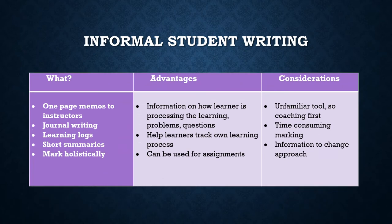Informal student writing is usually a one-page memo written to the instructor, a journal, learning logs, or short summaries — all marked holistically. You get information about how the learner is processing the learning, whether they have questions, and they track their own learning. The disadvantage is they may be unfamiliar with this tool, so you need to coach them first, and it is time-consuming to mark.